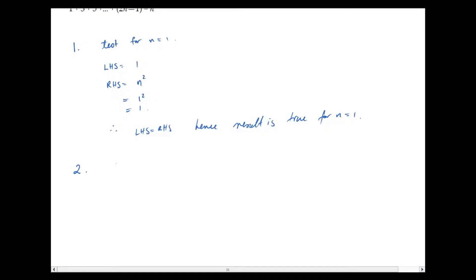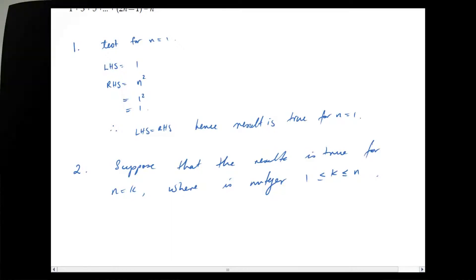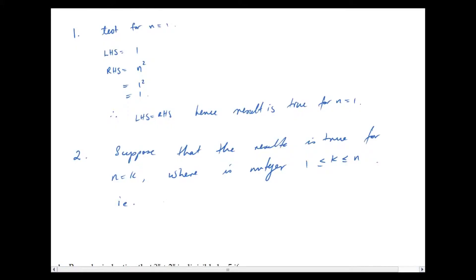Remember what is the next step in our domino analogy? Here it is in mathematics. Step 2: we suppose that the result is true for n equal k, where k is an integer such that k is greater than or equal to 1. So we suppose that the result is true for n equal k. That is, we are supposing that 1 plus 3 plus 5 plus ... up to the kth odd integer, which is 2k minus 1, is equal to k squared. That's what we're supposing — that it's true up to the kth odd integer.